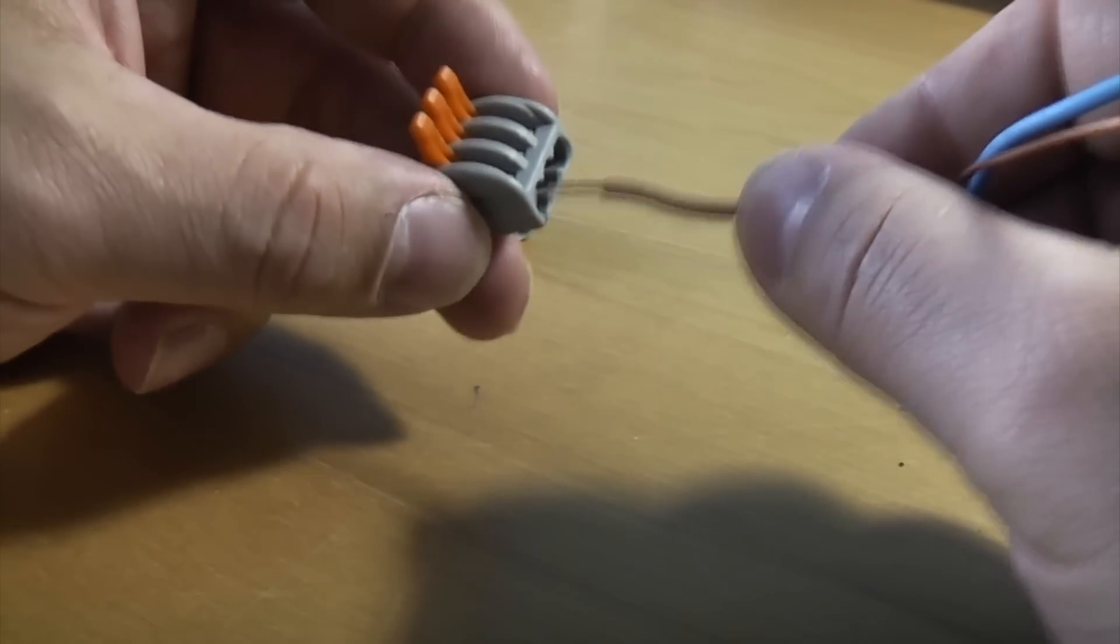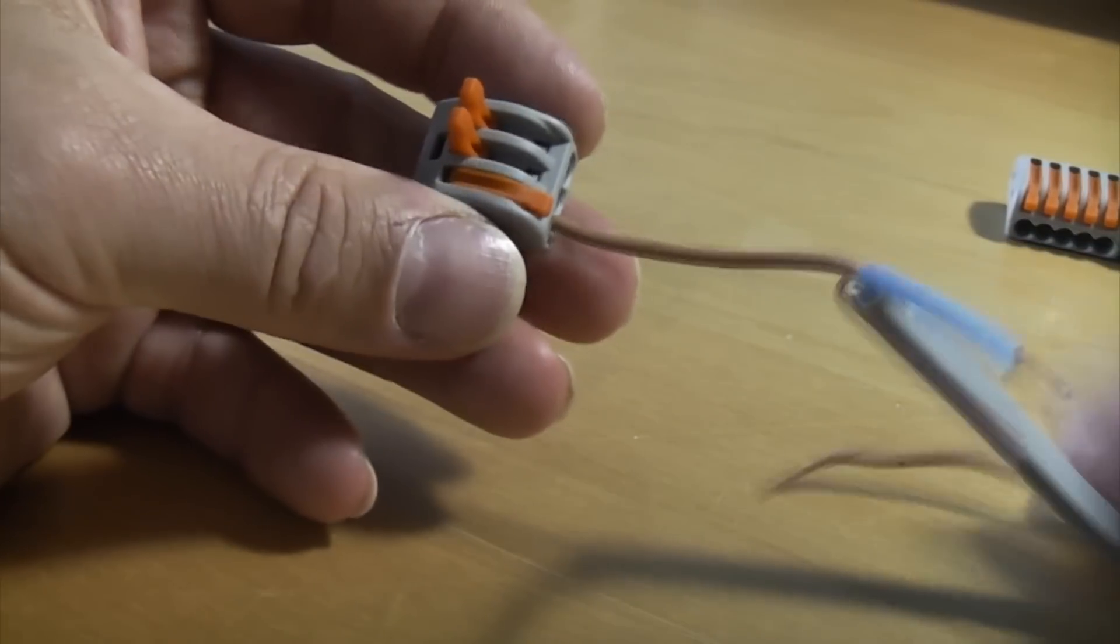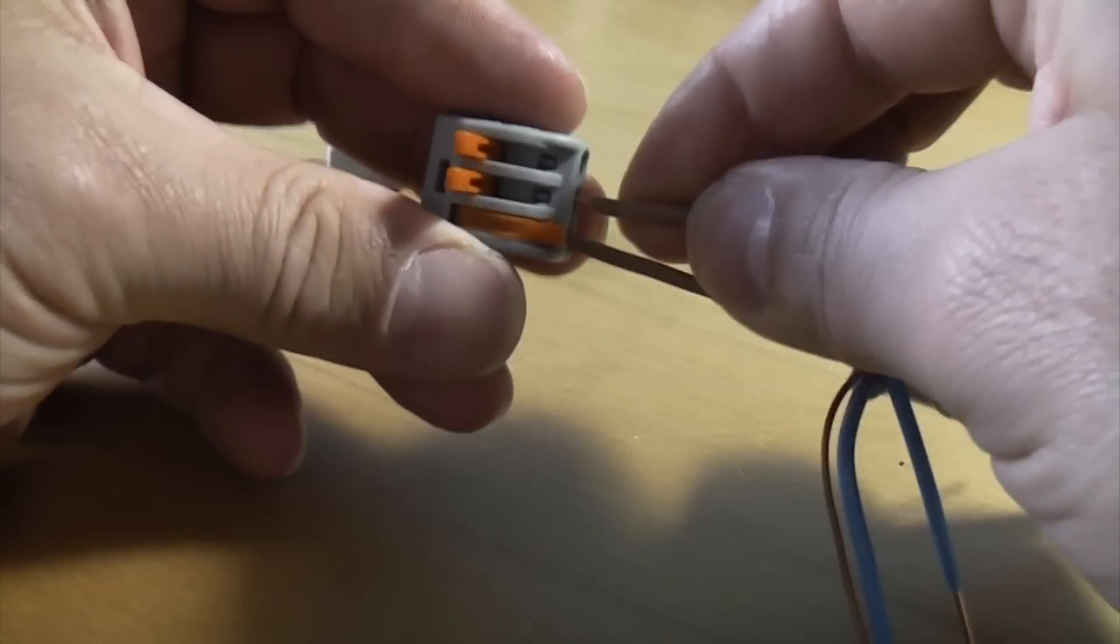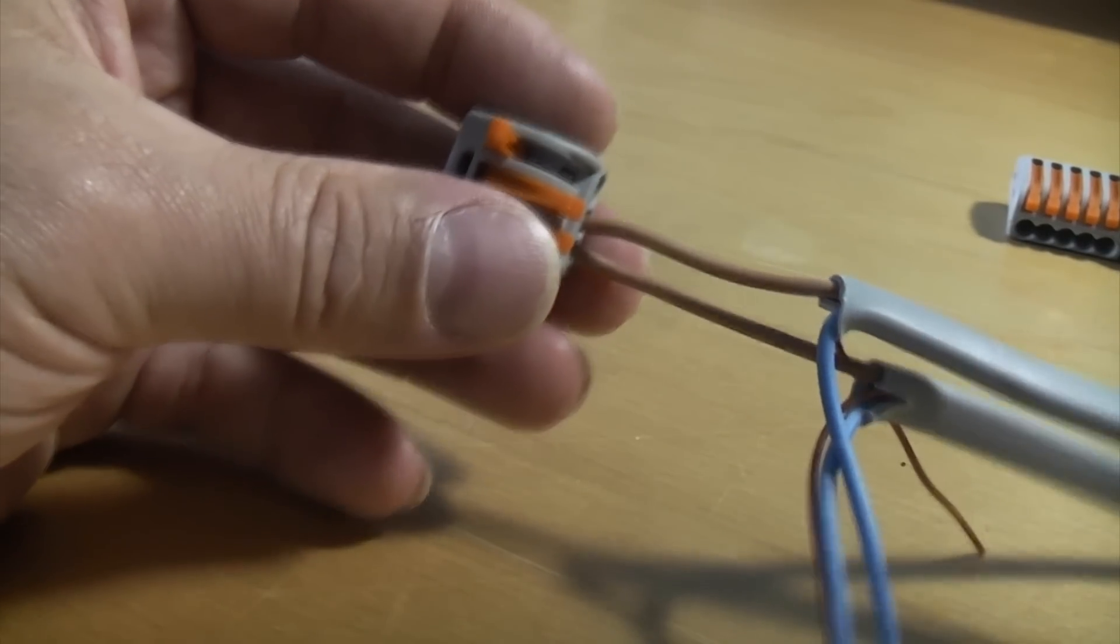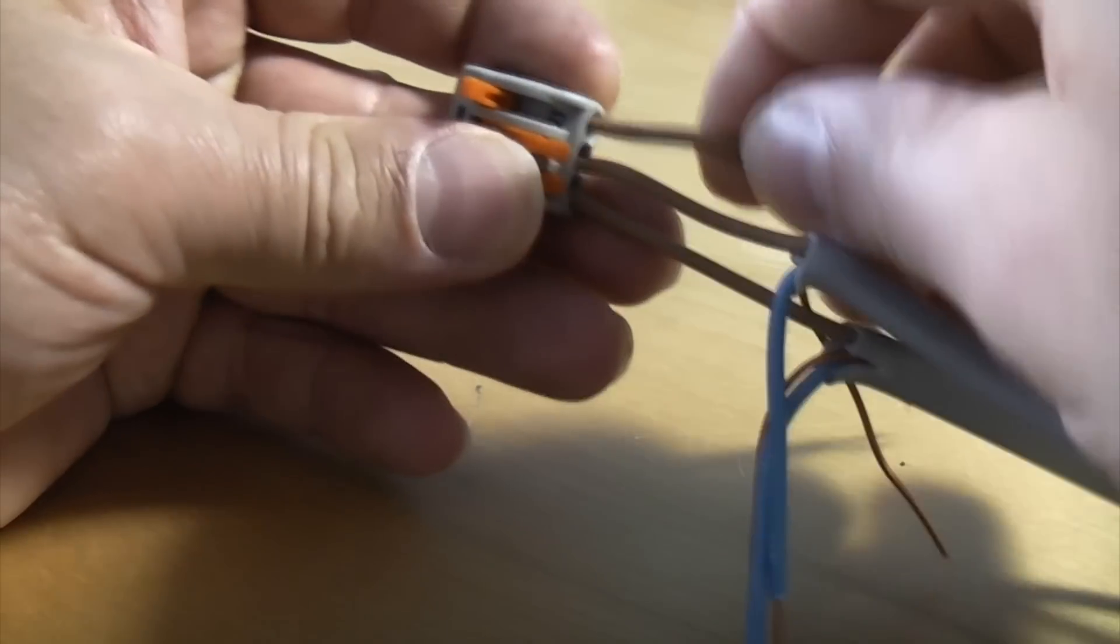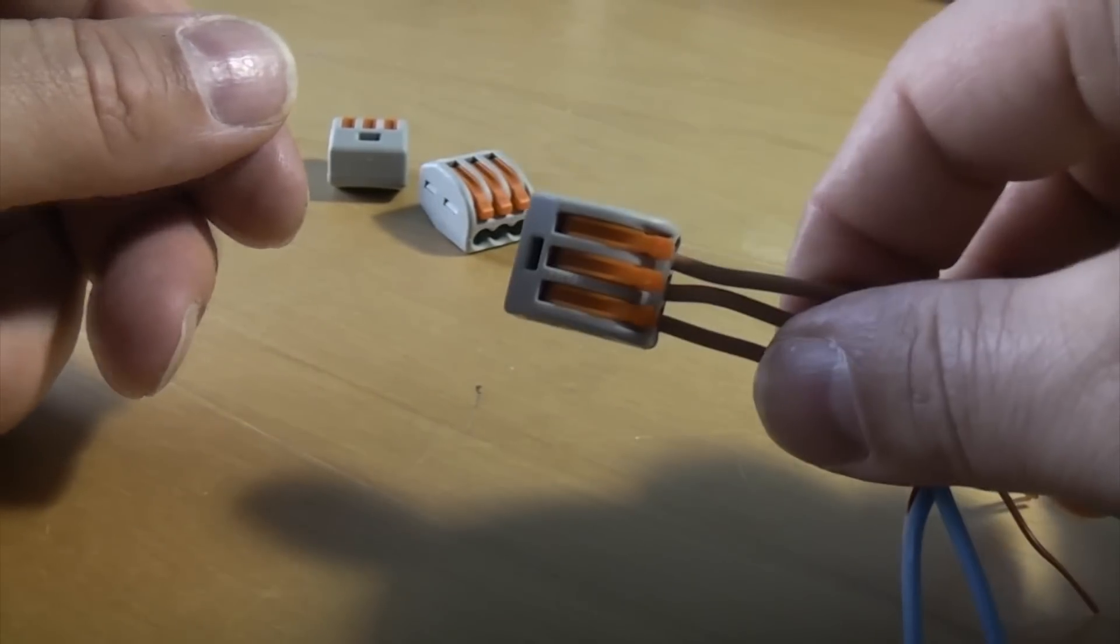You just strip your wire off, push it into the connector and close the lever. Then do the same with your next wire. Make sure it's pushed all the way in, close the lever again, and then put your last wire in there and close the lever and that's it.